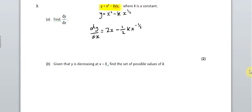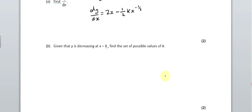Now, the tricky bit. Given that y is decreasing at x equals 4. So when x equals 4, when it's saying it's decreasing, it's telling you about the gradient. It's telling you that the gradient is going down, which means the gradient must be negative. It's less than zero.